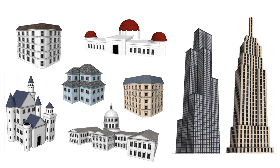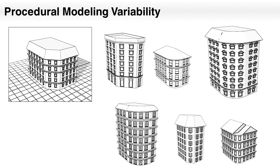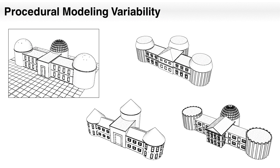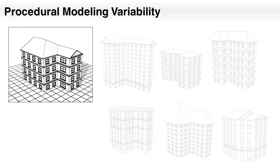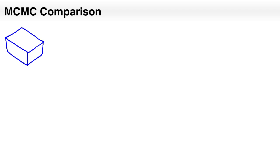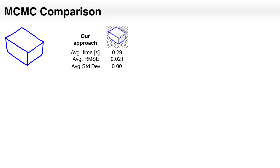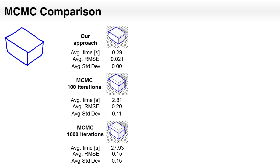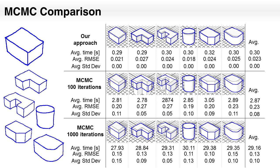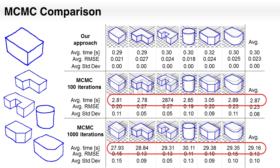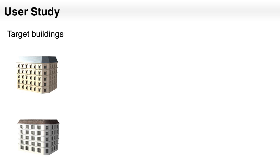Here are some of our results. Since our system is based on grammars, we can use one sketch to generate a wide range of variations inspired by the original model. This is ideal for designing complete cities where buildings have similar styles but present different configurations. We compare our system against the well-known MCMC algorithm commonly used in inverse procedural modeling. Our method finds a solution within a few milliseconds, while MCMC's result has less accuracy and needs significantly more time.